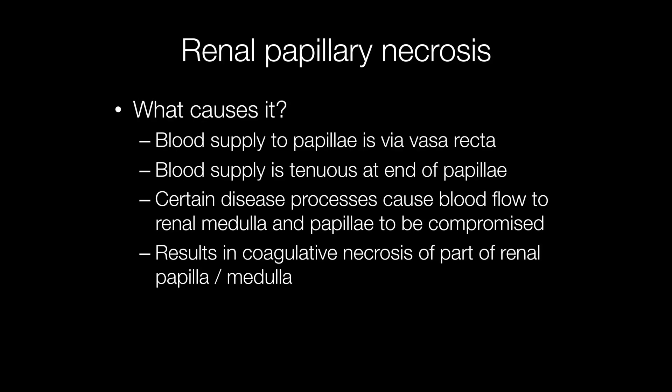In order to understand why the renal papillae are particularly susceptible to necrosis, it's worth having a think about the anatomy. The blood supply to the renal medullary papillae is via the vasa recta, and the furthest the blood has to flow is, of course, the end of the papillae. In fact, only 10% of the blood supply to the kidney actually reaches the inner portion of the medulla and papillae, and this explains why the papillae are particularly vulnerable if the blood supply is compromised.